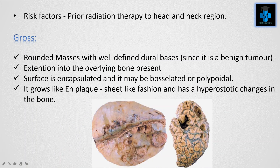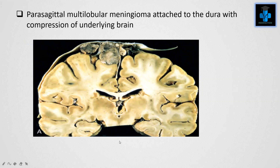This figure shows rounded masses with well-defined dural bases, and it is encapsulated since it is a benign tumor. Here we can appreciate the parasagittal multilobular meningioma attached to the dura with compression of the underlying brain.